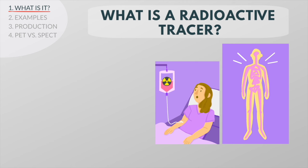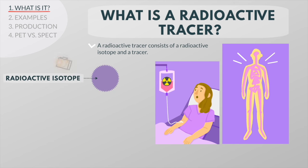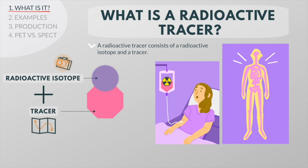Nuclear imaging produces images by detecting radiation from different parts of the body after a radioactive tracer is administered. A radioactive tracer, or radiopharmaceutical, consists of a radioactive isotope which creates the image, and a tracer which determines where the signal accumulates to form the image.